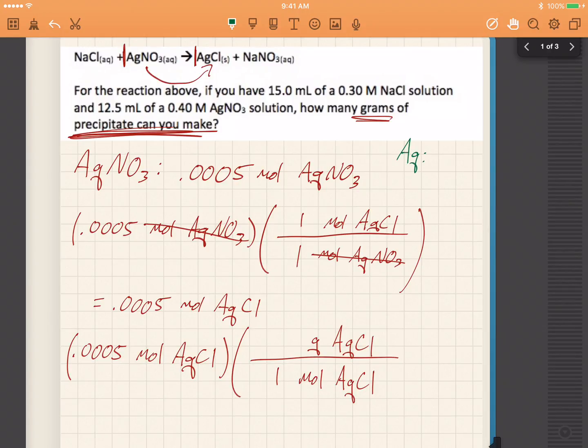Ag is 107.9 and Cl is 35.5. So AgCl is the sum of those, which is, let's see, 142 and then 1.4, that'll be 143.4.